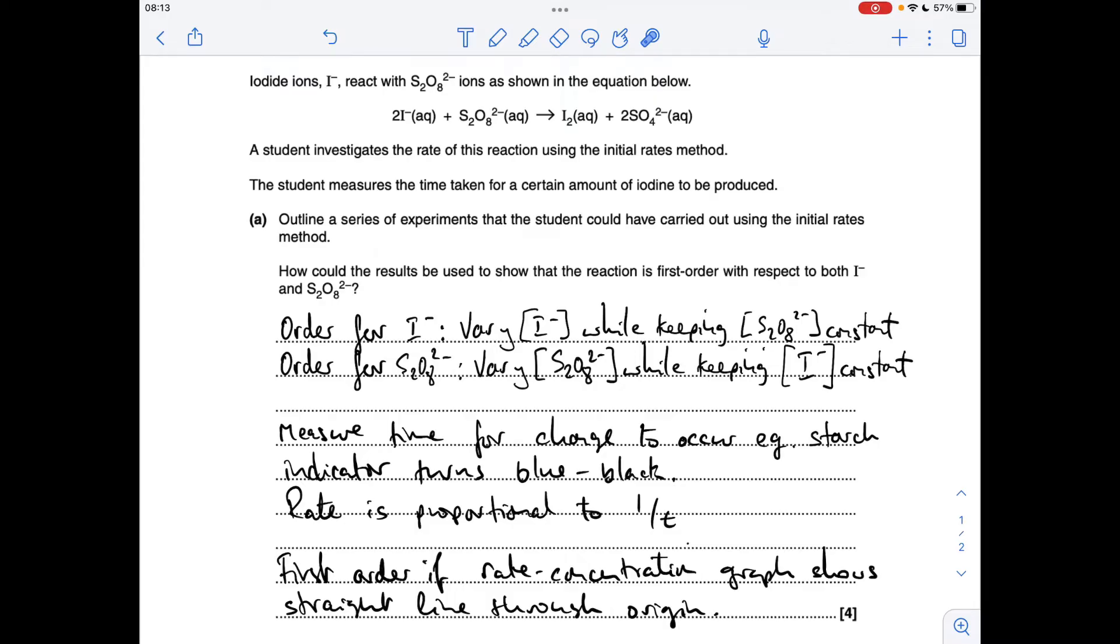And then to show that it's first order, there's a couple of ways you could say this. I've gone for the graph way. So if you draw a rate concentration graph from your results, if it's first order, the graph should be a straight line through the origin. The other way you could say it is if you double the concentration of I-, and the rate doubles, it's first order, because they've shown that they're directly proportional to each other.